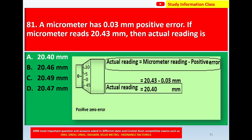This is a positive zero error. Actual reading = micrometer reading − positive error = 20.43 − 0.03 = 20.40 mm. So the actual reading for question number 81 is option A: 20.40 mm.